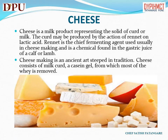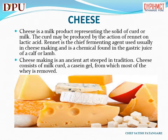In this slide we will discuss about cheese. Cheese is a milk product representing the solid curd of milk. The curd may be produced by the action of rennet on lactic acid. Rennet is the chief fermenting agent used in cheese making and is a chemical found in the gastric juice of a calf or lamb. Cheese making is an ancient art steeped in tradition. Cheese consists of milk curd, a casein gel, from which most of the whey is removed.